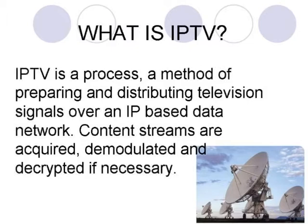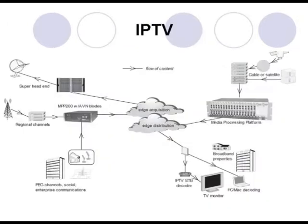Content streams are acquired, demodulated, and decrypted if necessary, then re-encoded digitally for IP transport, possibly with additional compression and new encryption. IPTV signals or streams are distributed on an IP-based network and viewed on an IPTV-capable viewing device, usually a set-top box.